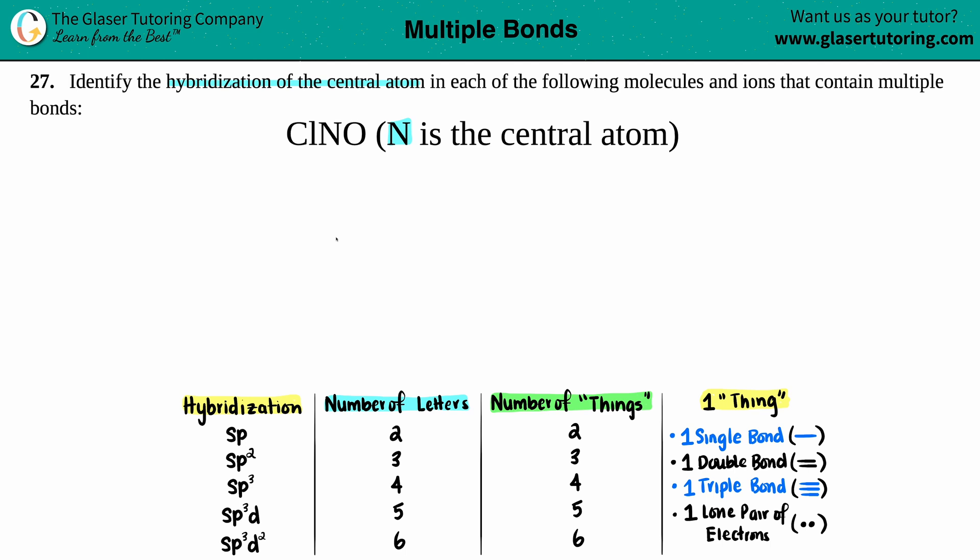They tell us that nitrogen is in the center, so we have N in the center. The nitrogen has the chlorine and the oxygen bound to it. For Lewis structures you don't really have to get the geometry right, so I'll just write it in a line.